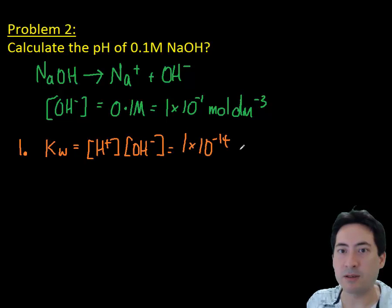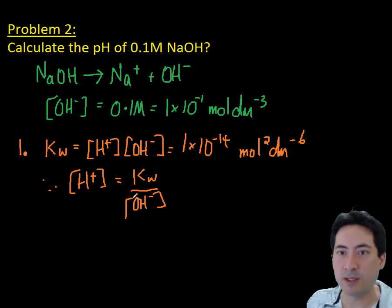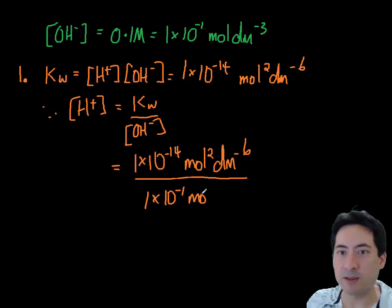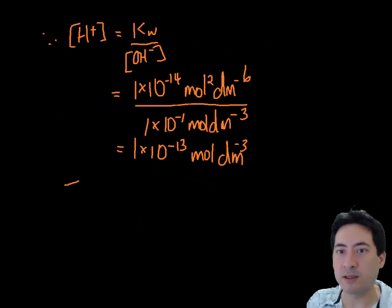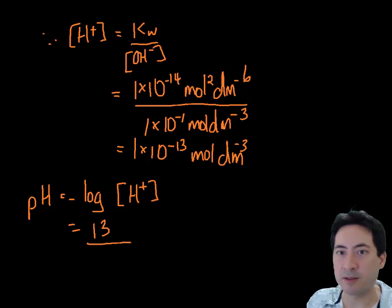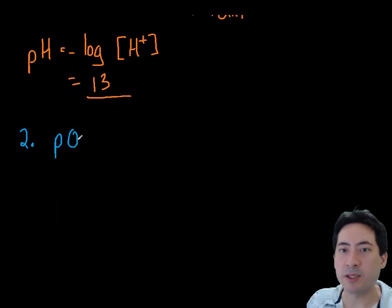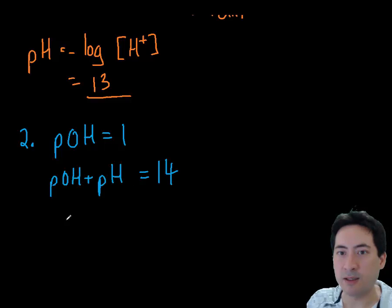We can do this two ways. We can use the ion product constant of water, that's 14, and then we can get hydrogen ion concentration from that and then do the negative log of that, which gives us 13. The alternate way is to get the pOH of that and then minus that from 14.